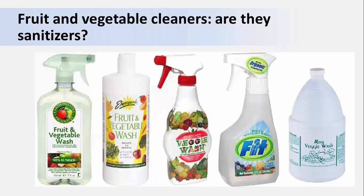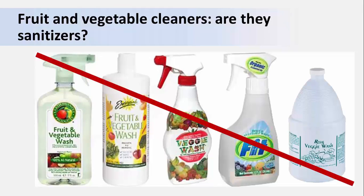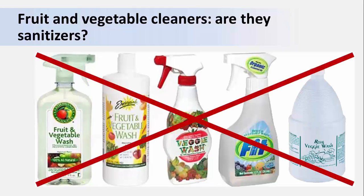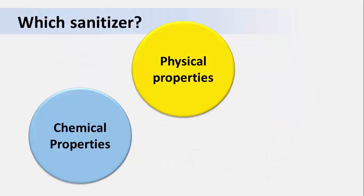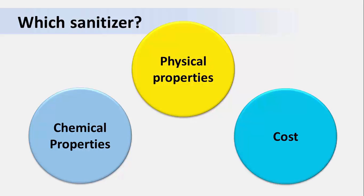We see a lot of consumer fruit and vegetable washes on the market now. But if you read the label, you'll see that almost none of these products are effective for killing microorganisms. If they were true sanitizers, the label would have to indicate that they were approved by the EPA and they would have an EPA registration number on the label. To understand which sanitizer is appropriate for your operation, it's important to understand a little about their chemical and physical properties and how those may affect how you can use the sanitizer. Of course, cost will be an important factor to consider as well.